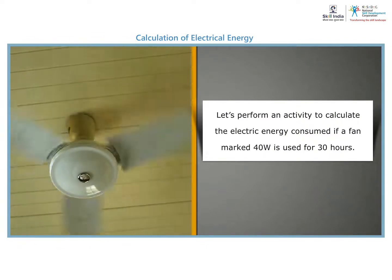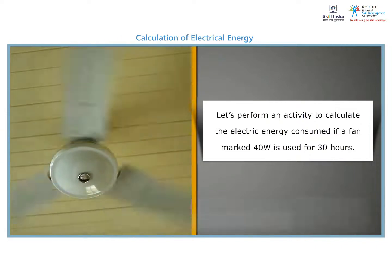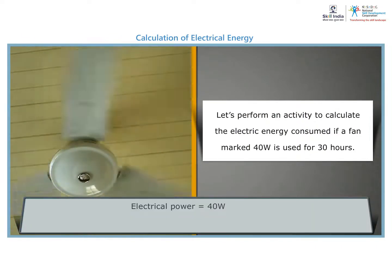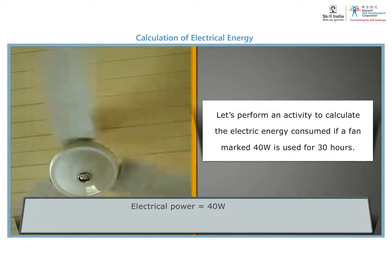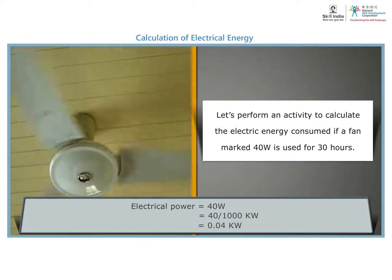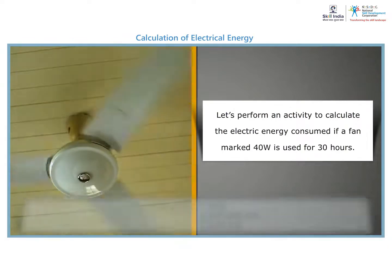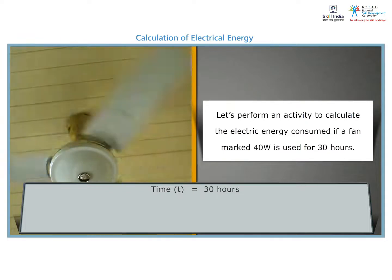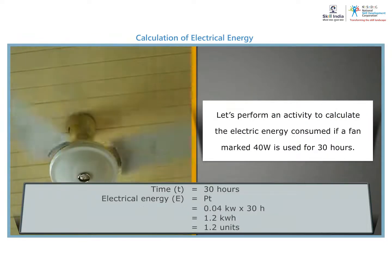The electrical power rating of the fan is 40 watts. To calculate the electrical energy used, we need to convert watts into kilowatts — for this, we divide the power rating by 1000. The time duration for which the fan was on is 30 hours. As we know, electrical energy is the product of power and time.